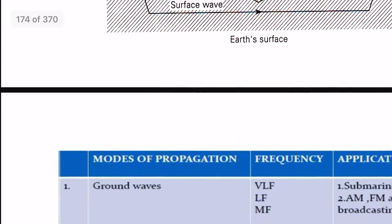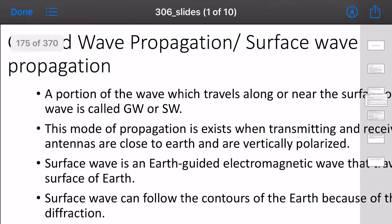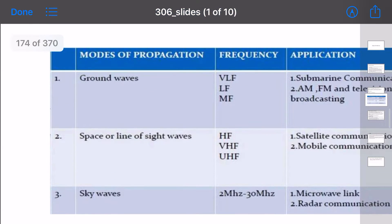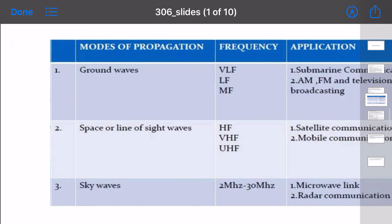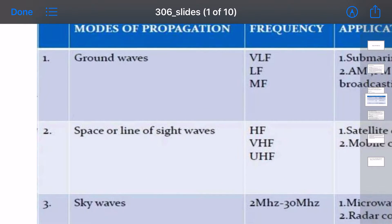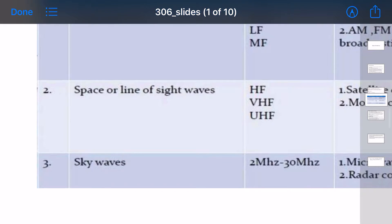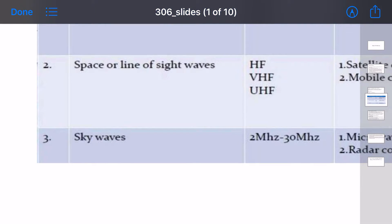Ground wave propagation applies up to medium frequency. Space wave propagation covers high frequency, very high frequency, and ultra high frequency. Sky wave propagation operates in a specific range of 2 MHz to 30 MHz.